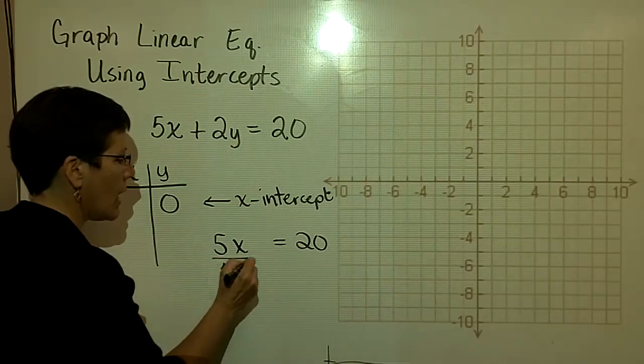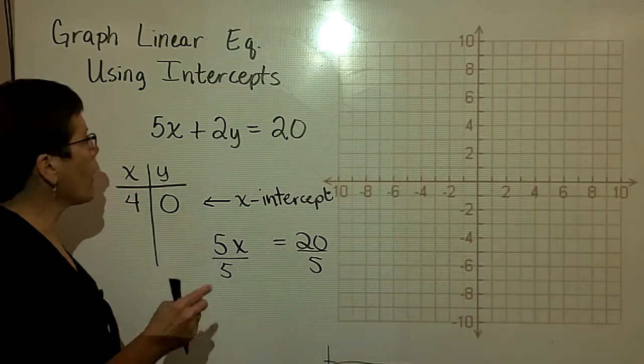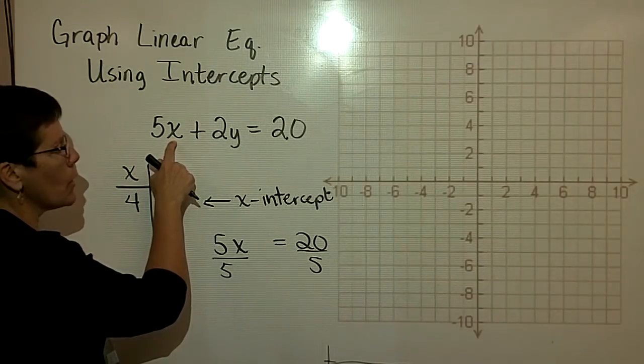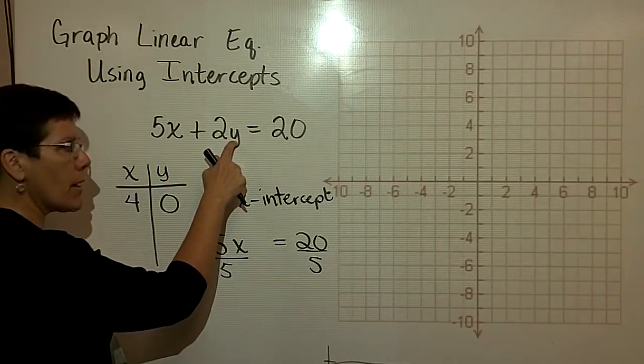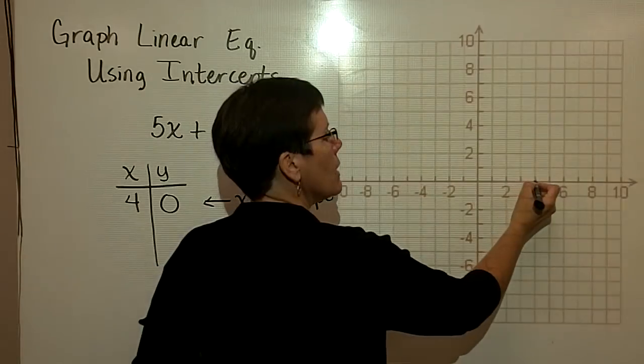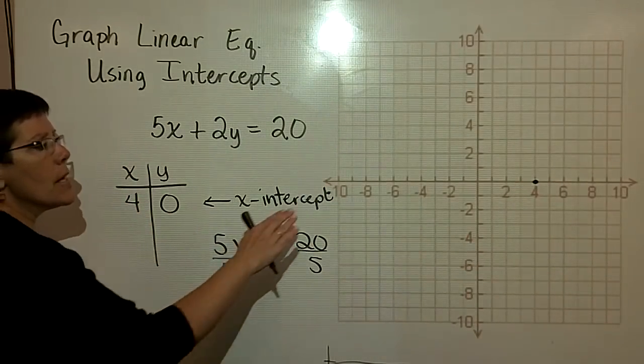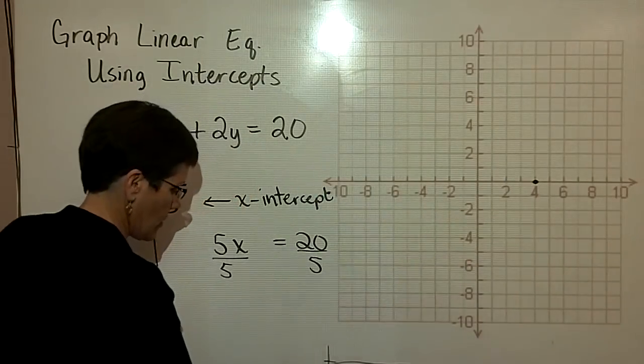And I divide both sides by 5, and I find out that x has got to be equal to 4. Again, 5 times 4 is 20 plus 2 times nothing is nothing equals 20. And let's plot that ordered pair. That's right there. When x is 4 and y is zero, that is called the x-intercept.